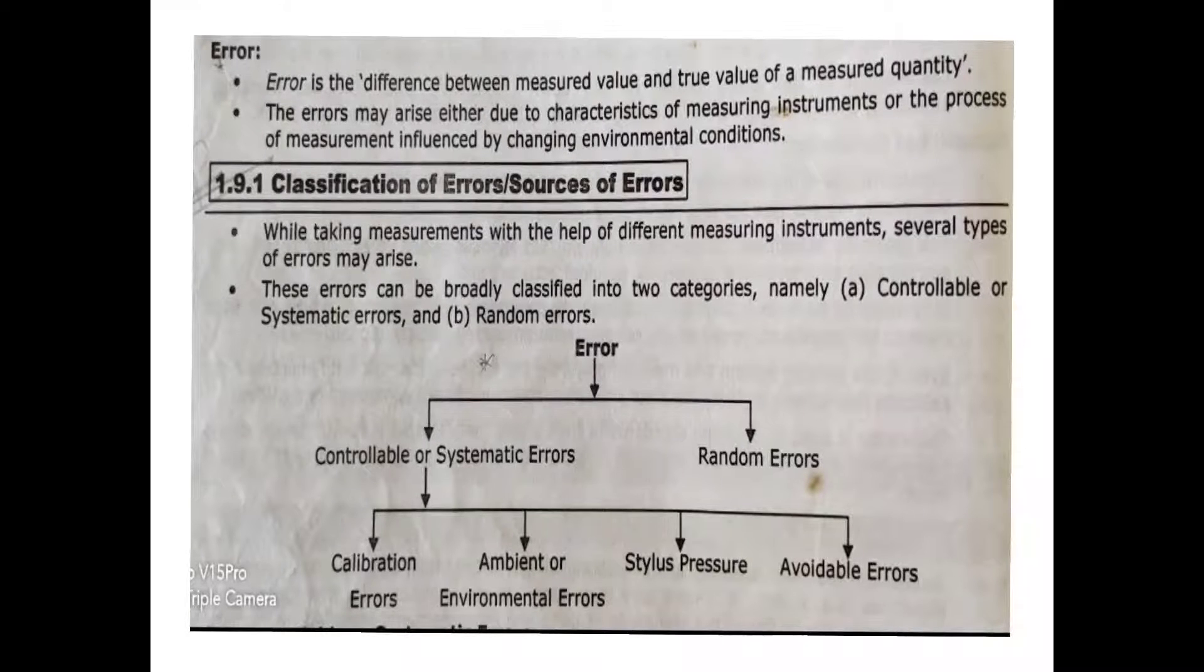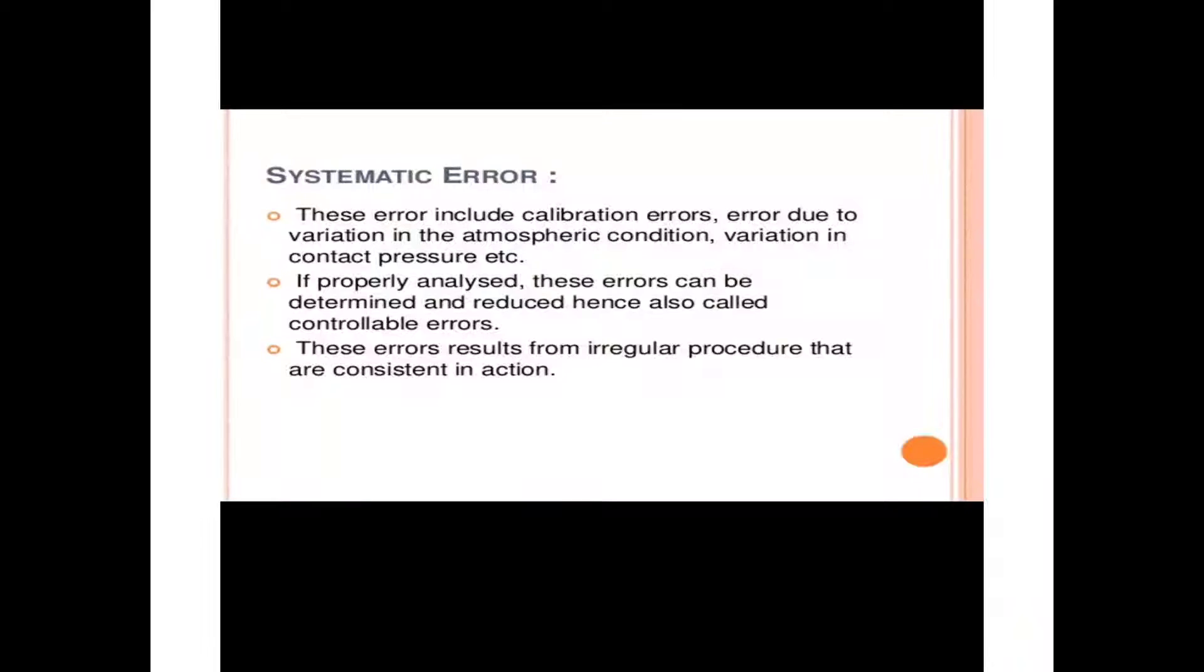Now, we will see each error in detail. First is systematic error. These errors include calibration errors, errors due to variations in atmospheric conditions, variations in contact pressure, etc. These errors are controllable in both their magnitude as well as direction.